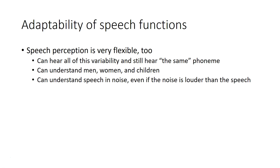Given all this variability in speech production, it must also be the case that speech perception is very flexible. We have all this variability in speech sounds but still hear the same sound—like all those different examples of T sounds. We can understand speech from men, women, and children who have different sizes and therefore different acoustics. We're also pretty good at understanding speech in background noise, even when noise is louder than the speech, so the speech perception system must accommodate all of these differences.